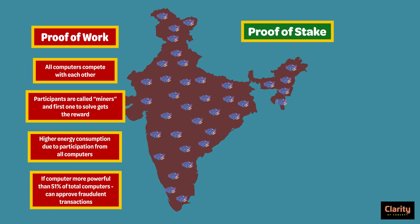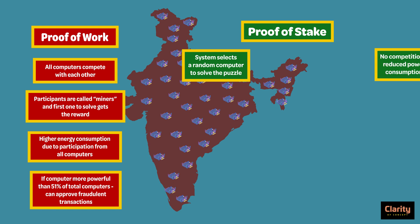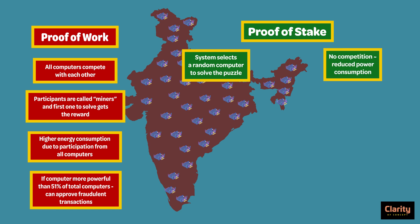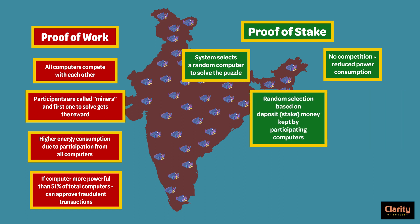This method is simple. When a new block is to be added and a puzzle to be solved, the system selects a random computer on the network and allows it to solve. There is no competition from everyone at the same time, which reduces power consumption. However, the selection of computers is not totally random — in order to be chosen, all computer nodes keep a deposit of money. These are called stakes.